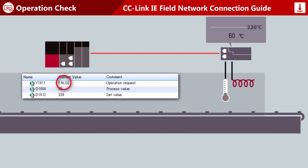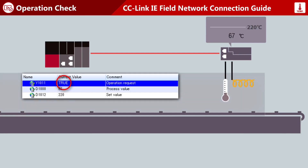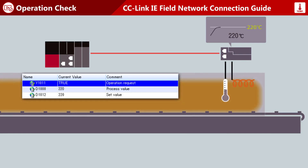Turn on the operation request to start temperature control. Temperatures will be controlled on the basis of the PID constants obtained with auto-tuning.